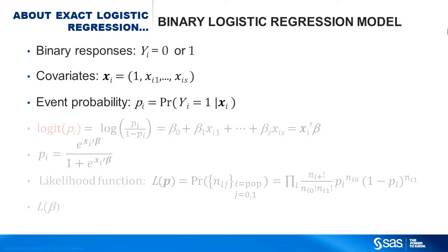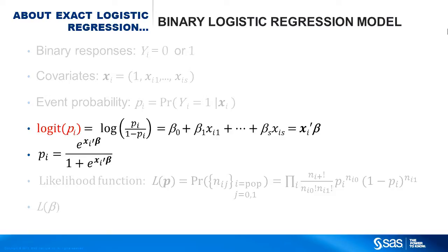To discuss exact logistic regression further, you need a model. Let y be your binary response variable, and let the x vector be your intercept and a set of covariates. In linear regression, you model the expected value of y given the x, but the expected value of a zero-one variable is just the probability that y equals one. You model the event probability with a linear predictor through the logit link, which you can invert and solve for the probabilities p sub i.